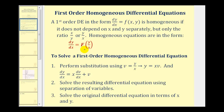We'll first check to see if the given differential equation is homogeneous, and then if it is, we can solve it by performing substitution. We'll perform the substitution v equals y divided by x. Since we'll also have to perform a substitution for dy/dx, if we solve for y by multiplying both sides by x, we get y equals x times v. Then to find dy/dx, we'll perform implicit differentiation and the product rule.